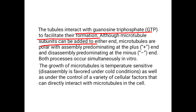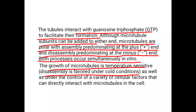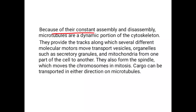Microtubule subunits can be added to either end, but microtubules are polar, with assembly predominating at the plus end and disassembly predominating at the minus end. Both processes occur simultaneously in vitro. The growth of microtubules is temperature sensitive — disassembly is favored under cold conditions — as well as under the control of a variety of cellular factors that can directly interact with microtubules in the cell.